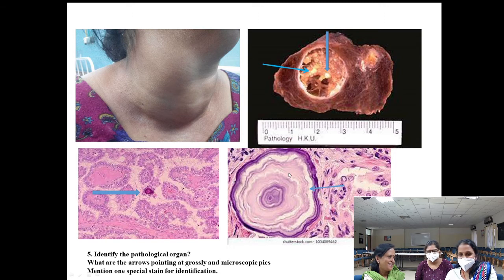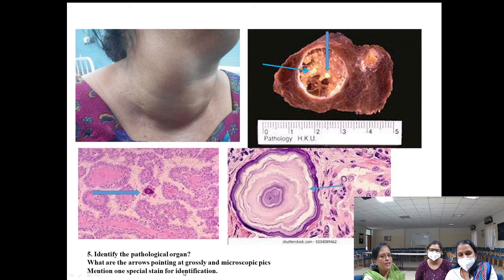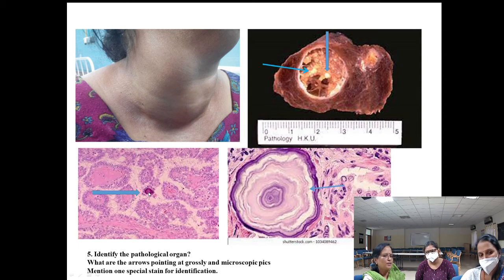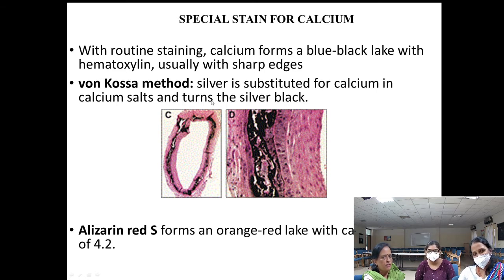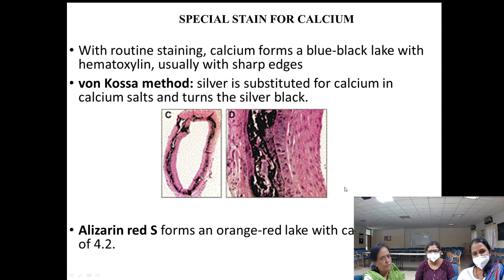Students were asked what color calcium takes in H&E — answers varied between blue, purple, and black. The special stain they identified was von Kossa stain, a silver stain that produces a black end product. Alizarin red stains calcium red. A picture of the von Kossa stain was provided.